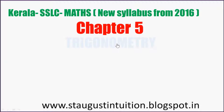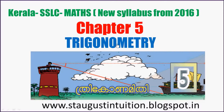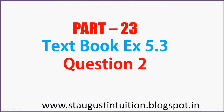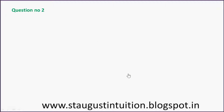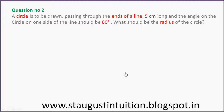Chapter 5 Trigonometry, Part 23, Textbook Exercise 5.3, Question number 2. A circle is to be drawn passing through the ends of a line 5 cm long, and the angle on the circle on one side of the line should be 80 degrees. What should be the radius of the circle?